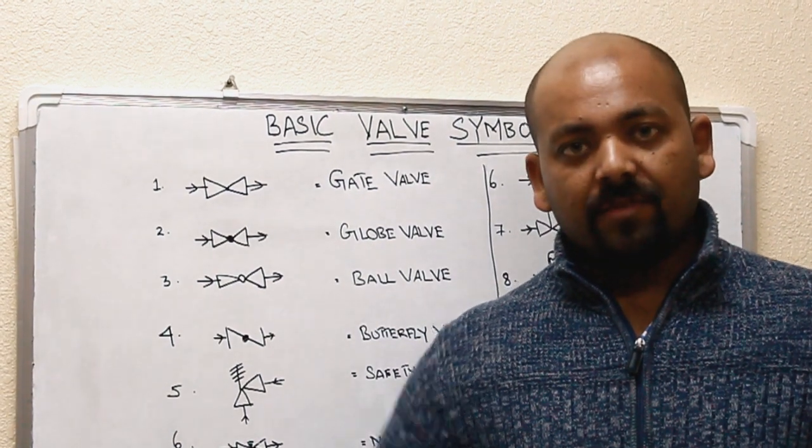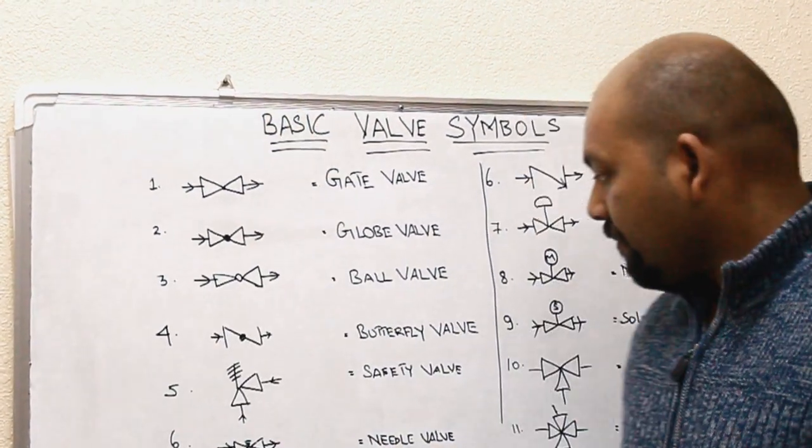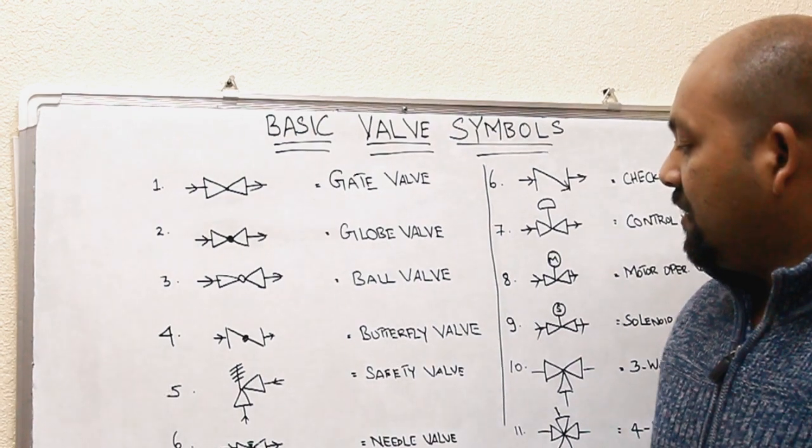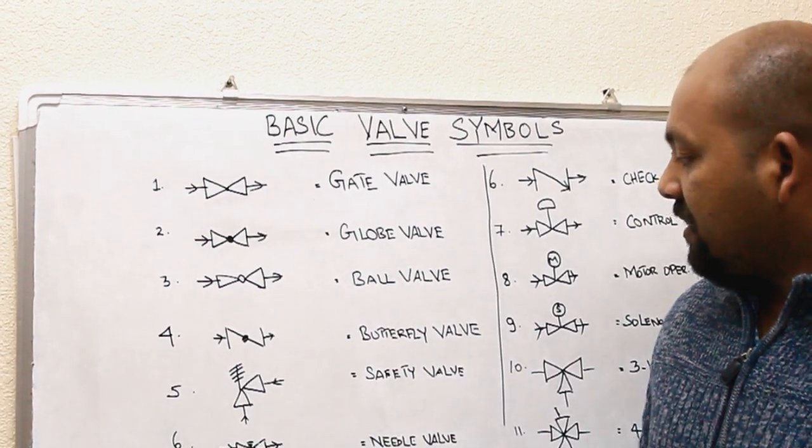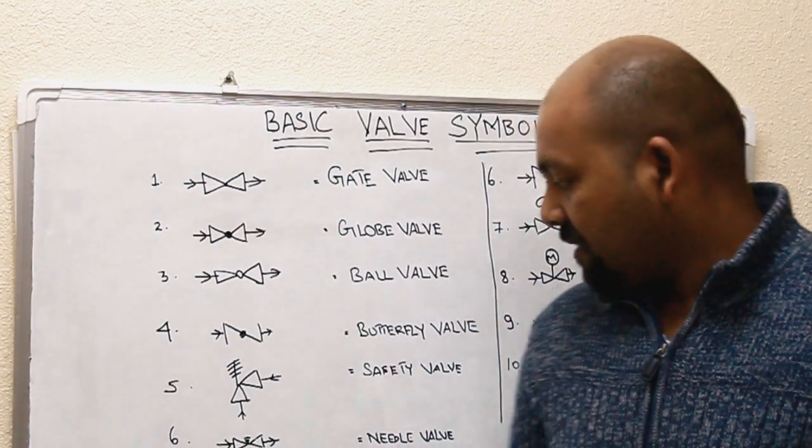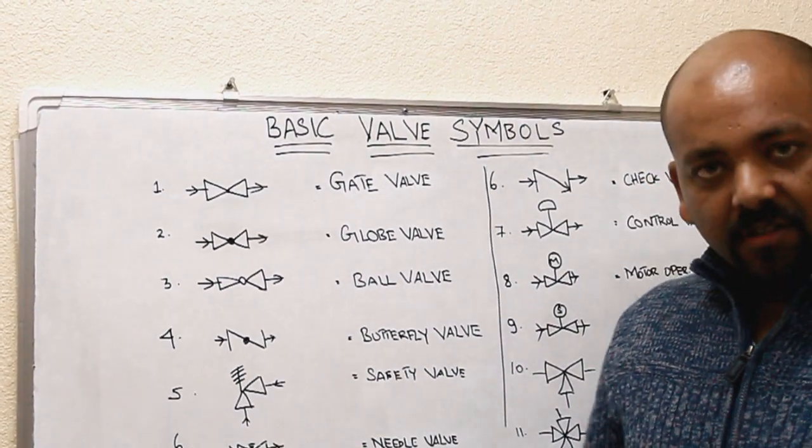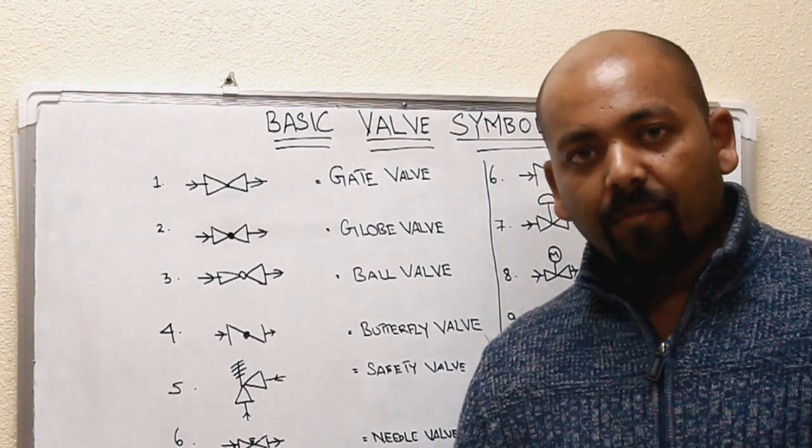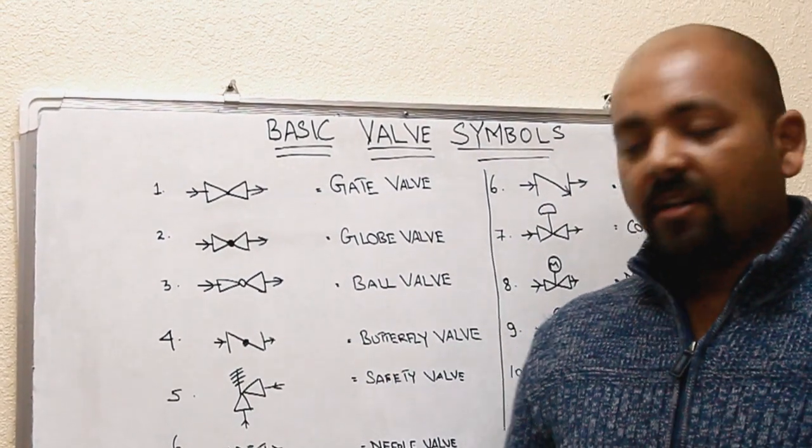Needle valve. This needle valve is operated with a needle port, a tapered port disc. It can be controlled, the same operation: open, close, as well as regulate. And it can be used in small pipelines.